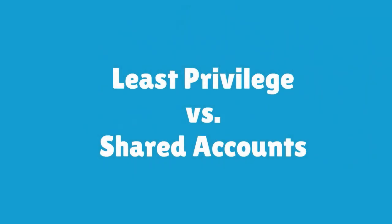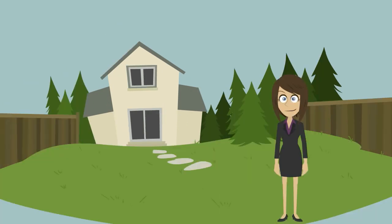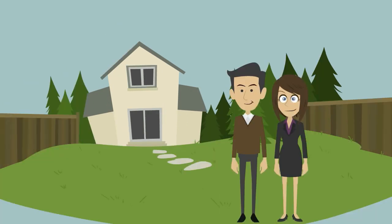To demonstrate the principle of least privilege versus using shared accounts for access, let's use a little analogy. Let's say we had a house and three people who need access to that house and the rooms inside: mom, dad, and little Cindy.